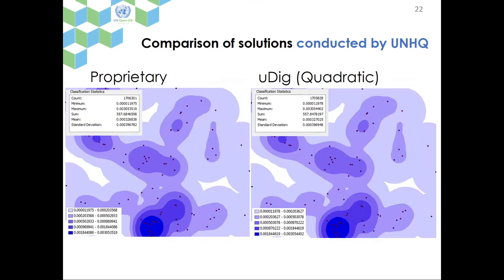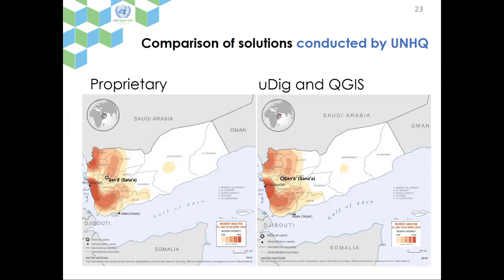This is another example test. We tested how proprietary software displays results — the outcome looks very similar. However, we had to use two software tools: QGIS and UDIG. For using the analytic functions, we used UDIG. For display, we had to use QGIS because it provides better visualization functions.